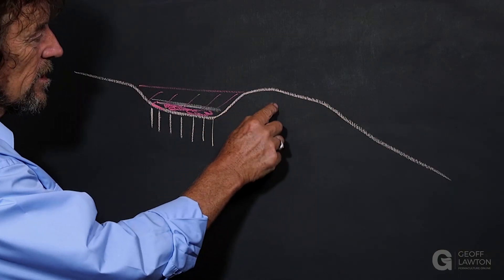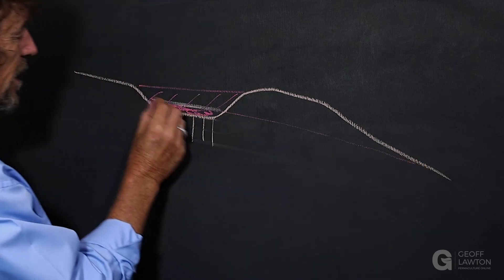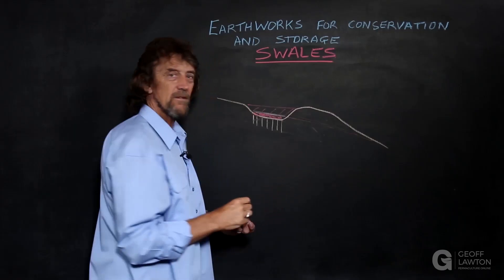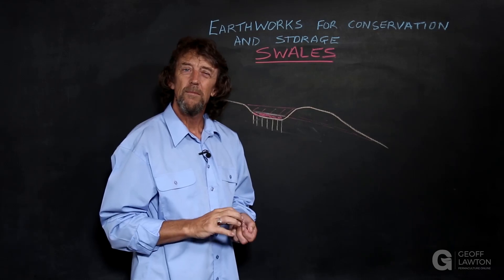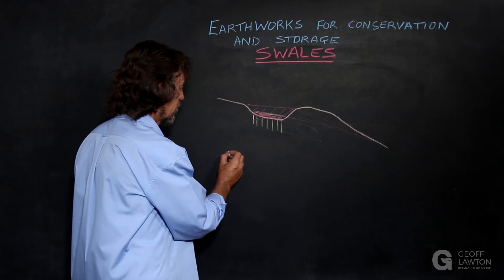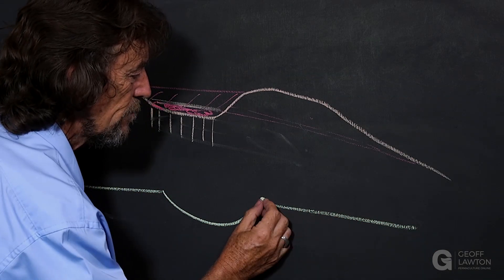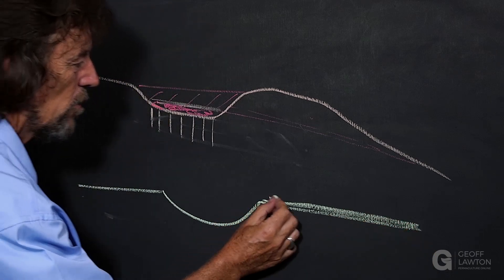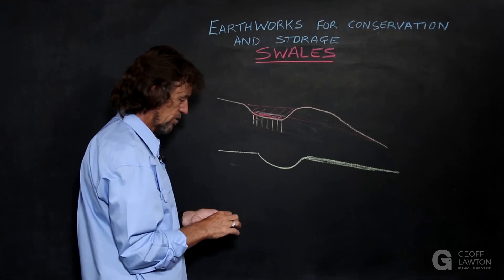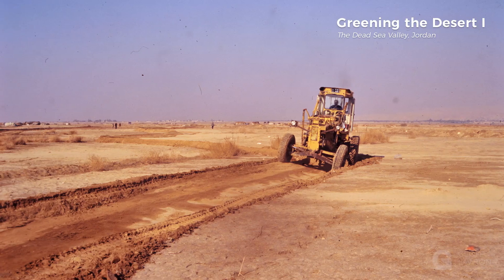The spoil of the swale is normally mounded downhill, with topsoil on the mound from excavation. But in flat country, there might not be a mound — the material is spread out on the lower side and it won't look like there's a mound at all. You'll get a flat profile of a swale.